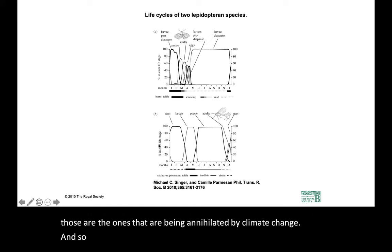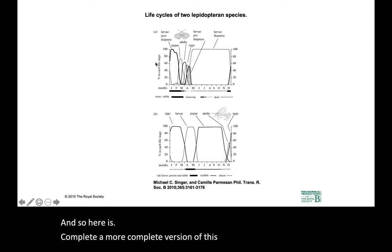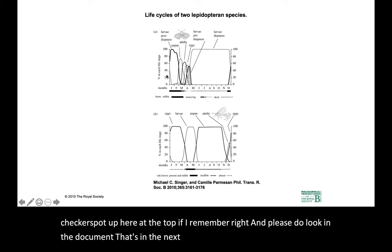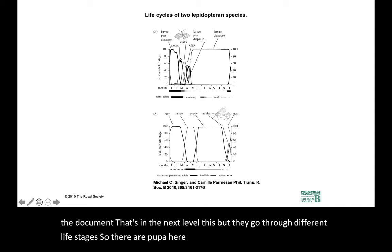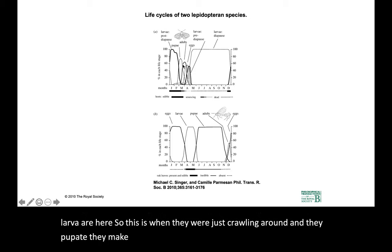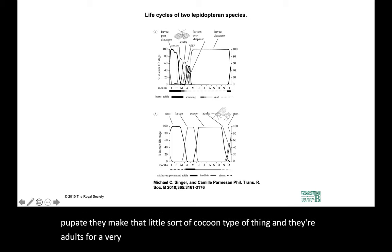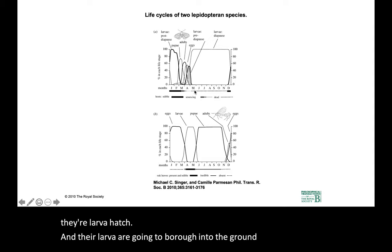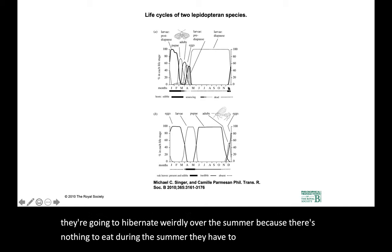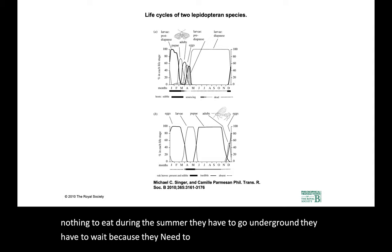Here is the more complete version. The checkerspot goes through different life stages — there are larvae, they pupate, they make a cocoon-type thing, and they're adults for a very short while. Then they lay their eggs, and their larvae hatch. Then their larvae burrow into the ground and hibernate over the summer, because there's nothing to eat during the summer. They have to wait because they need to be ready to eat the plants when they start to bloom.